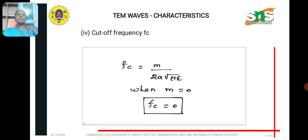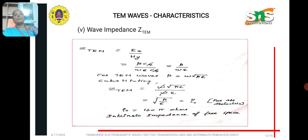So now, the fourth parameter is its cutoff frequency. Cutoff frequency is the frequency at which the wave motion stops. Below the cutoff frequency, no wave will propagate for any type of waveguide. So, for TM wave, cutoff frequency is general formula M by 2A root of mu epsilon. For transverse electromagnetic wave, since M value is 0, the cutoff frequency is also 0. So, below 0 frequency, no wave will propagate.